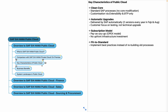Regarding automatic upgrades: as discussed, SAP releases two versions every year in February and August. Customer focus is on testing, not technical upgrades — SAP performs the upgrades and customers need to perform regression testing to verify everything is working fine. SAP has also provided automation testing tools to help reduce that work. It is a subscription model — pay as you go — operational expenses with no capital infrastructure investment required. The approach is fit-to-standard: implementing best practices instead of rebuilding old processes.